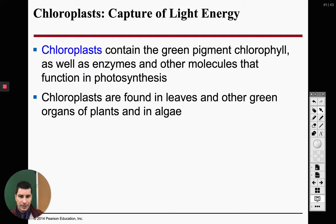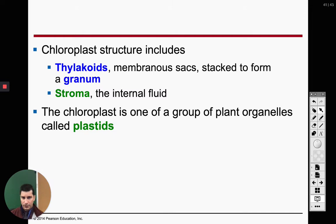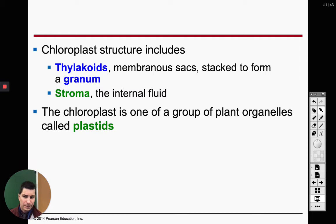I'm going to go over the picture because I think it's easier than going over all the words. The chloroplast is in a group of organelles native to plant cells only called plastids. There are other examples of different plastids, but we don't need to go over them.